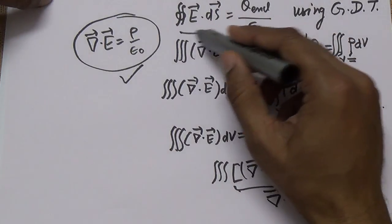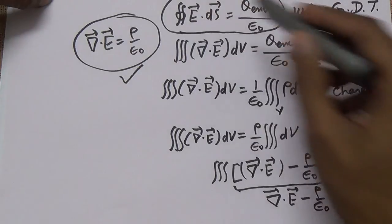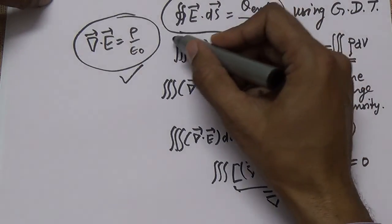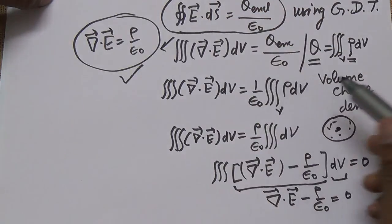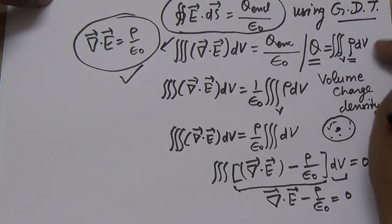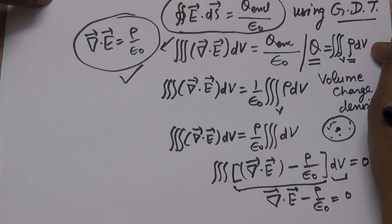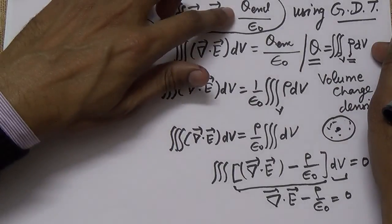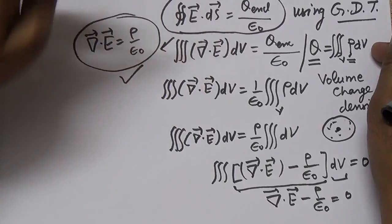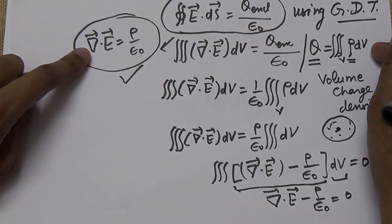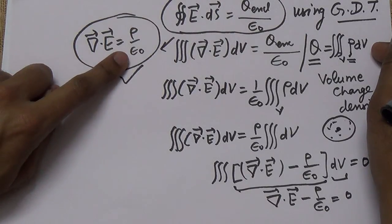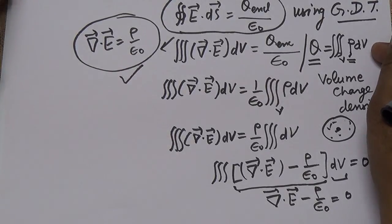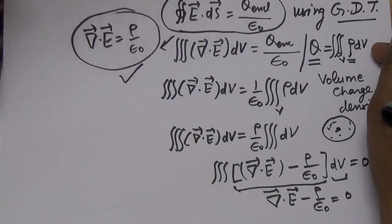We can convert this integral equation into the differential form with the help of the Gauss Divergence Theorem. The closed surface integral E·dS equals Q/epsilon-naught in integral form; in differential form this is del·E equals rho/epsilon-naught, where rho is the volume charge density. This was the conversion of Gauss law into the differential form.